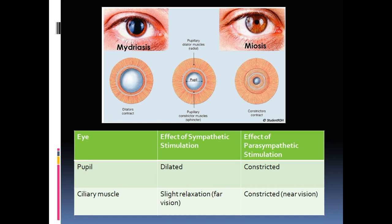Now let us study the effects of parasympathetic and sympathetic divisions on individual organs. Understanding these is important because drugs acting on these receptors can increase or decrease sympathetic or parasympathetic stimulation to treat disorders. Starting with the eye: the autonomic nervous system controls pupil size and lens focus.